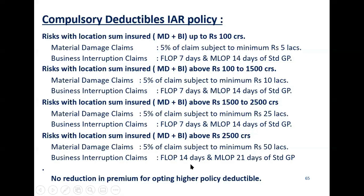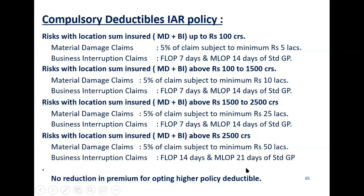An important point: as per GIC norms, there is no reduction in premium to be offered for opting for a higher policy deductible. If the client says he wants a 5 crore deductible, you can take it, but there is no reduction in price — GIC insists on a minimum price. In such cases, if the client wants a reduction in premium, you need to approach the international market or seek special approval from GIC.